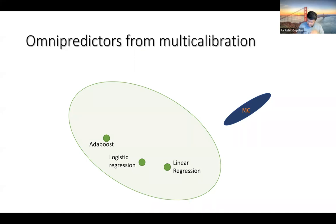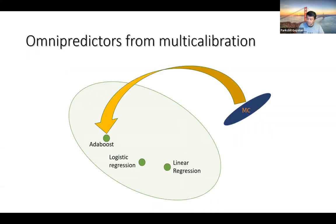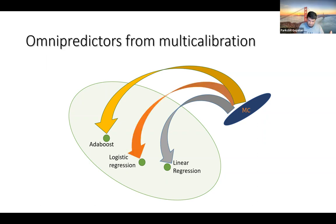In a picture: convex loss minimization includes AdaBoost, logistic regression, and linear regression. Once you have a multi-calibrated predictor for class C, to compete with AdaBoost, use the post-processing for the exponential loss. To compete with linear regression, use the L2 squared loss post-processing. To compete with logistic regression, use the logistic loss post-processing. For any new convex Lipschitz loss function, you can still post-process and do better than anything in C.